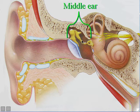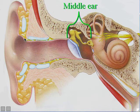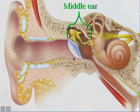The ossicles plus the tympanic membrane make up the middle ear. The middle ear is housed inside a hollow space inside a bone — the temporal bone. The temporal bone is one of your skull bones; it's the skull bone that's closest to your pinna. So the middle ear structures are all housed within a hollow space inside your temporal bone.